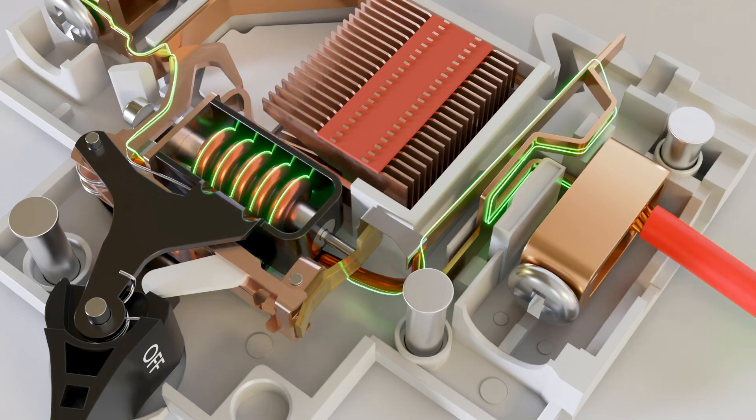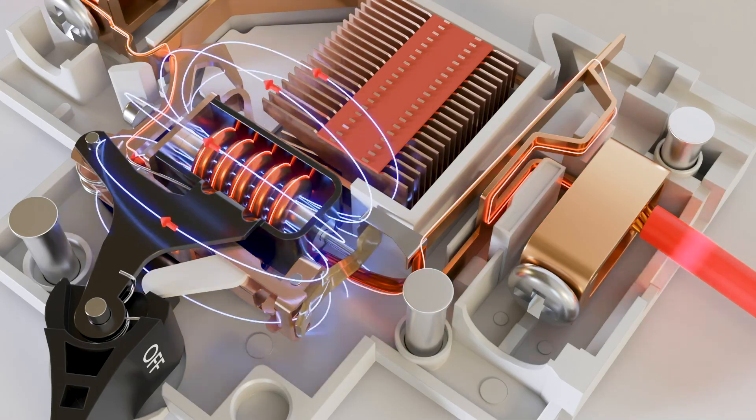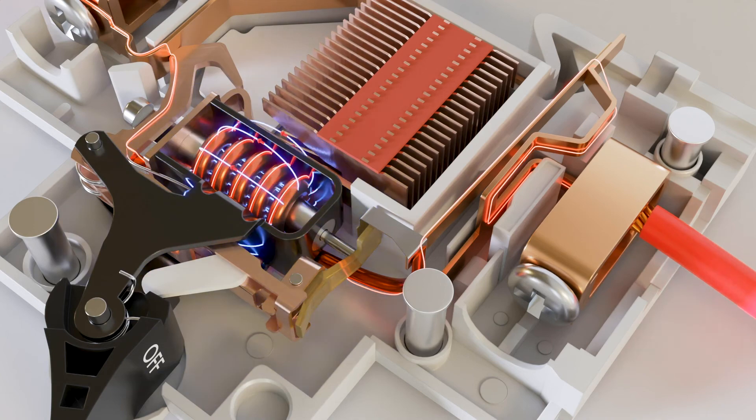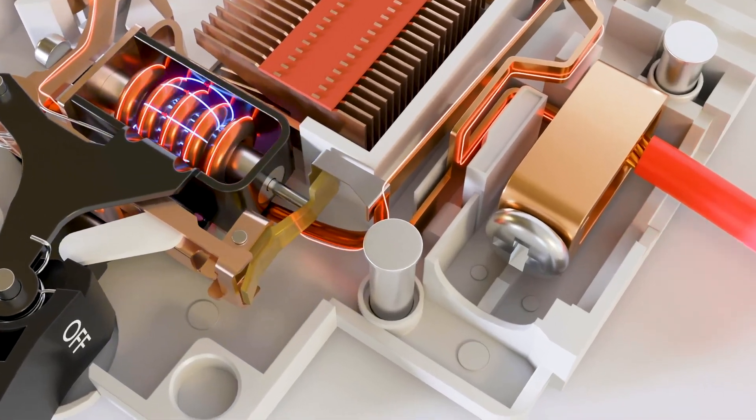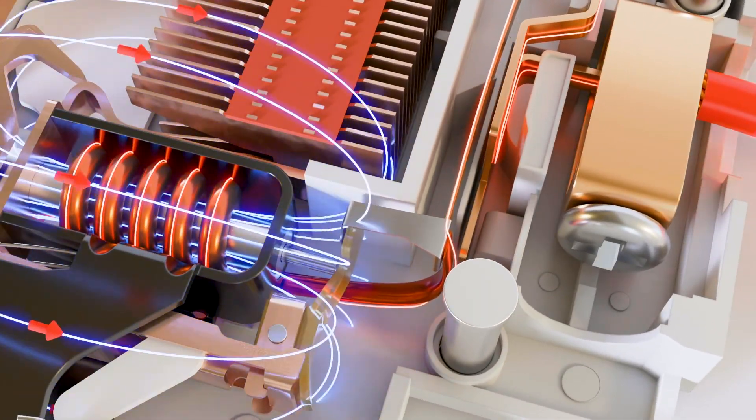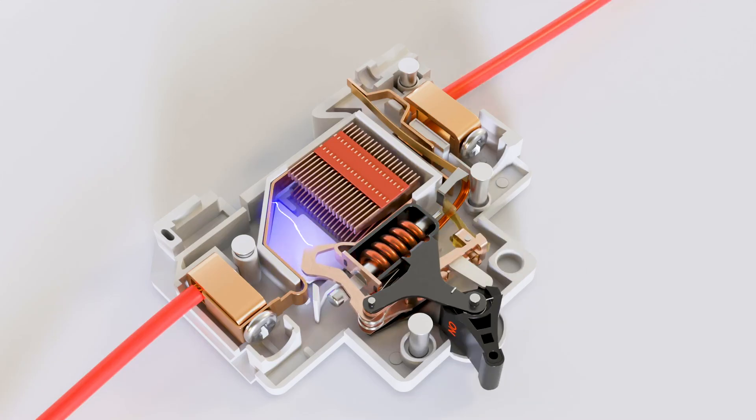When an overload current passes through bimetallic strips for a few seconds, it generates excessive heat in the bimetallic strip. Due to this excessive heat, a bimetallic strip bends and triggers the operating mechanism.